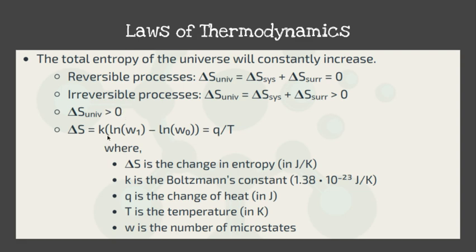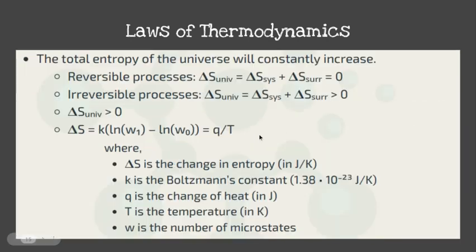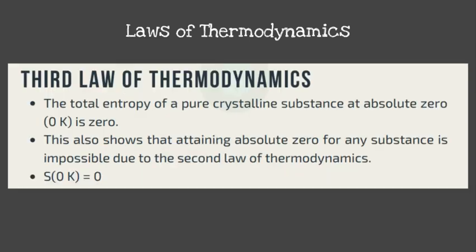Entropy can be solved using two equations — one involving microstates, which we will not tackle, and one involving the change in heat divided by temperature. The third law of thermodynamics states that the total entropy of a pure crystalline substance at absolute zero is zero. However, attaining absolute zero is impossible because q/T at T = 0 K would be mathematically undefined (division by zero), making it physically impossible. That concludes our second video.